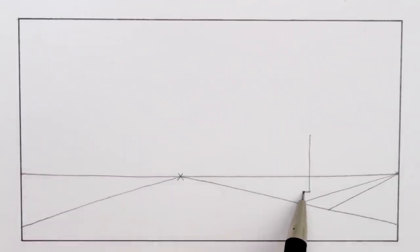Start by drawing a vertical line for the nearest corner of the nearest building. Next by drawing lines from this vertical line to the two vanishing points, we can draw the sides of the building.